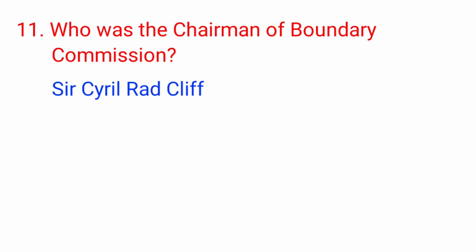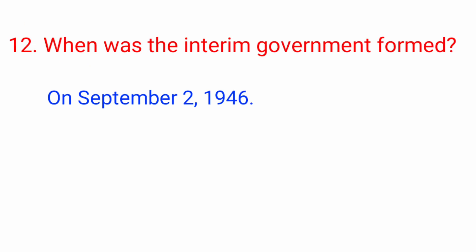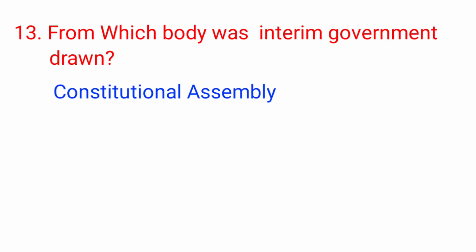Question number 11: Who was the chairman of the Boundary Commission? Answer: Sir Cyril Radcliffe. Question number 12: When was the interim government formed? Answer: on September 2, 1946. Question number 13: From which body was the interim government drawn? Answer: the Constituent Assembly.